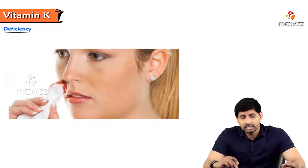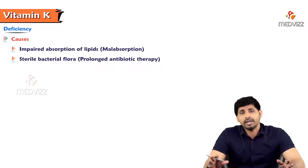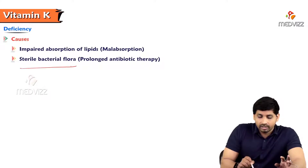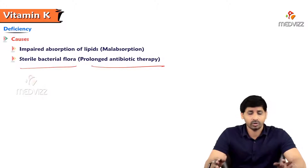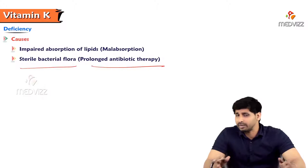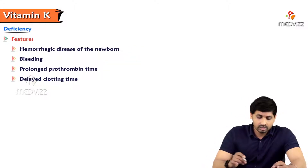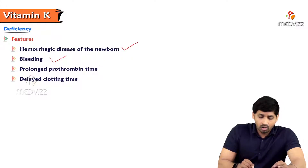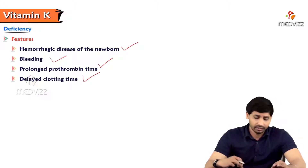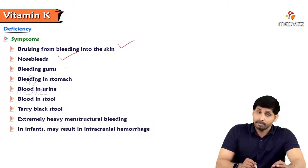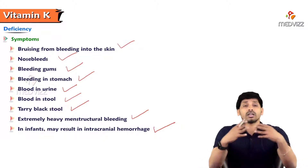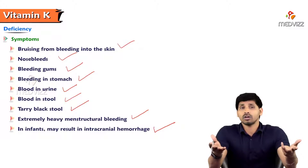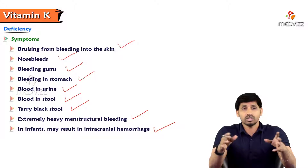In deficiency of vitamin K, there is uncontrolled blood loss. Deficiency can result from impaired absorption of lipids or sterile bacterial flora - for example, if antibiotics kill intestinal bacteria, no vitamin K will be synthesized from that source. Features of deficiency include hemorrhagic disease of the newborn, continuous bleeding, prolonged prothrombin time, and delayed clotting time. Symptoms include bruising from bleeding into the skin, nosebleeds, bleeding gums, bleeding in the stomach, blood in urine, blood in stool, cherry black stool, and extremely heavy menstrual bleeding. In infants it may result in intracranial hemorrhage, because the clotting factors are not converting into active form.